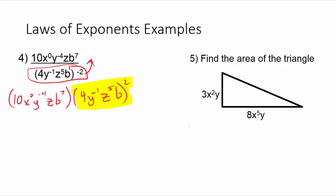So, going ahead and squaring this, we've got four squared is 16. We would have y to the negative two, z to the tenth, and b squared, if we square everything in there. We've got to multiply the exponents. Remember, there's an invisible one here on the b. We don't take two times four to get eight. We square four, which gives us 16. I'm going to bring the rest of this stuff down, so 10x to the zero, y to the negative four, z, b to the seventh.